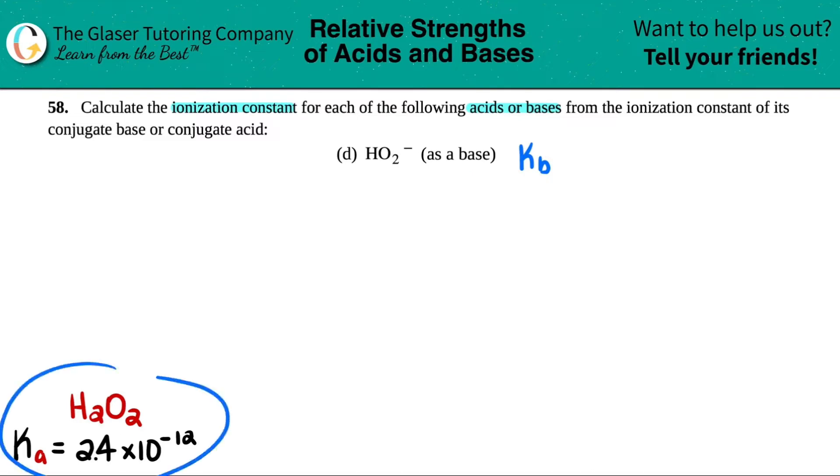So I went to the back of a textbook to find out what the conjugate acid of HO2 minus is. Remember, conjugate acid has one more hydrogen. So instead of one hydrogen, you have two hydrogens, but all the other elements should stay the same. And that Ka value was 2.4 times 10 to the negative 12th.